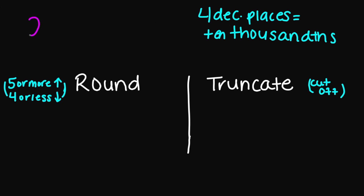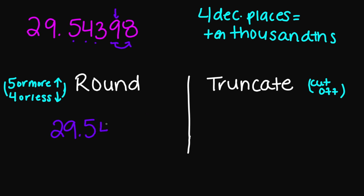Let's try one more: 29.54398. Four decimal places — counting 1, 2, 3, 4 — puts me right here at the 9. If I look next door, I have 5 or more, so I will be rounding up. This 9 becomes a 10, carrying over, so the answer is 29.5440. And if you truncate, that puts you right between the 9 and the 8, giving 29.5439.